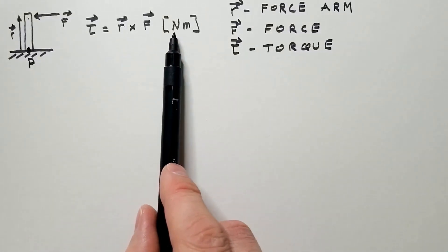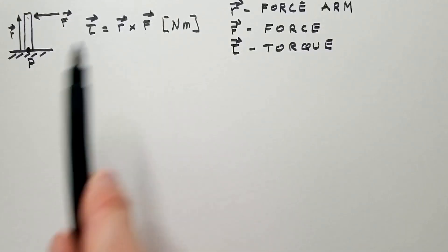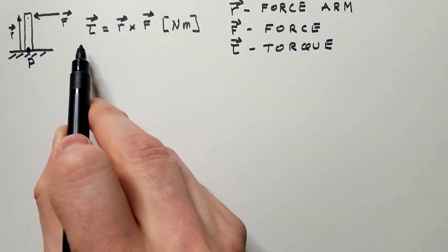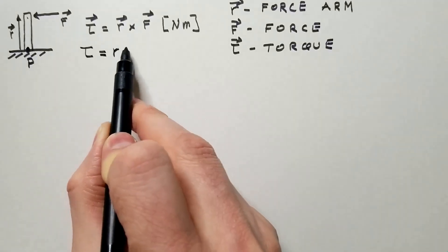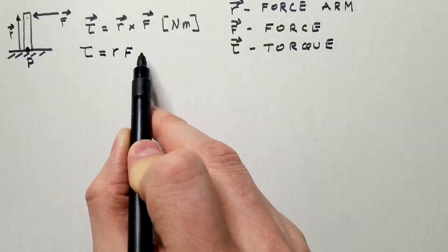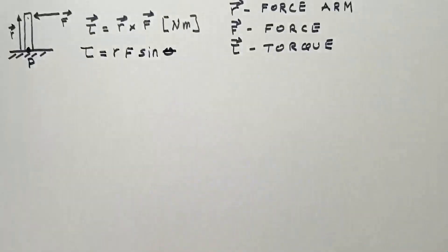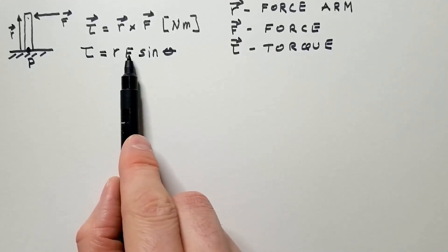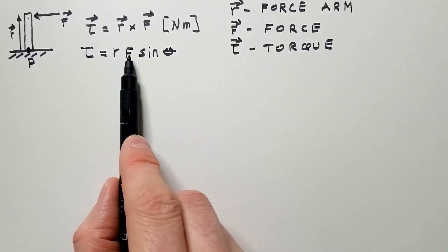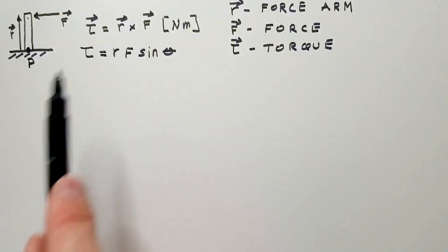Units for torque are Newton meters in the SI system. If we are interested in the magnitude of this torque — because this is a cross product — then the magnitude is R·F·sin(θ), where θ is the angle between R and F measured from R to F, and R and F without arrows are the magnitudes of these two vectors.